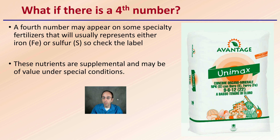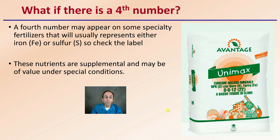What if there's a fourth number? What if you see the three numbers and then there's a fourth number? The fourth number may appear in some specialty fertilizers and will usually represent either iron or sulfur. Be sure to check the label. In this case, we're looking at a multi-nutrient blend. These nutrients are supplemental and may be of value under special conditions, which is why there are typically only three numbers listed.